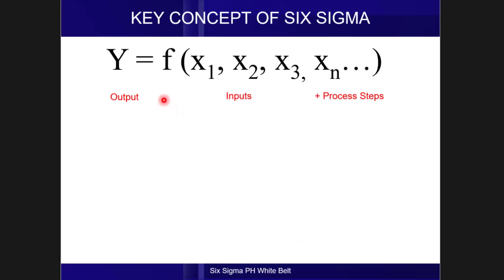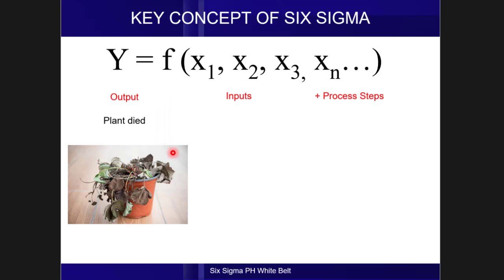When we use the Six Sigma equation, we first identify what the project Y is, or what the output is, and in Six Sigma, project Y are either process defects or processing time. In our example, the project Y is the plant died. It is a defect.